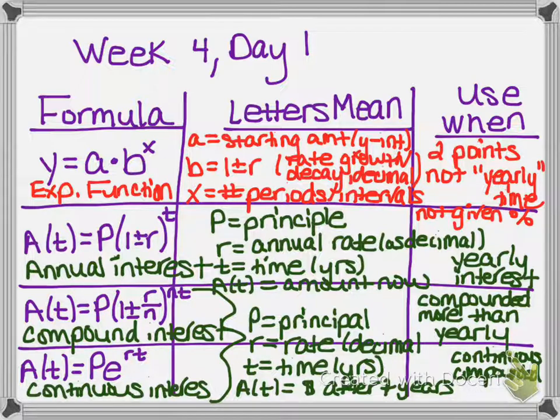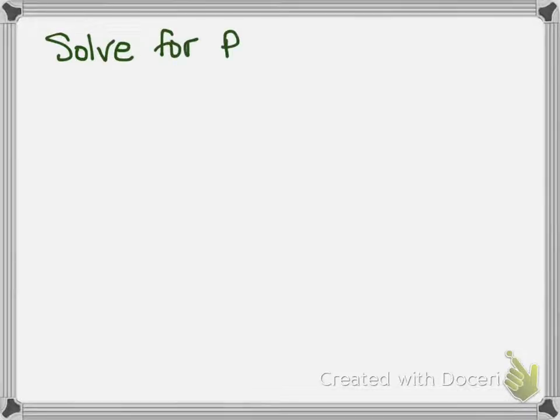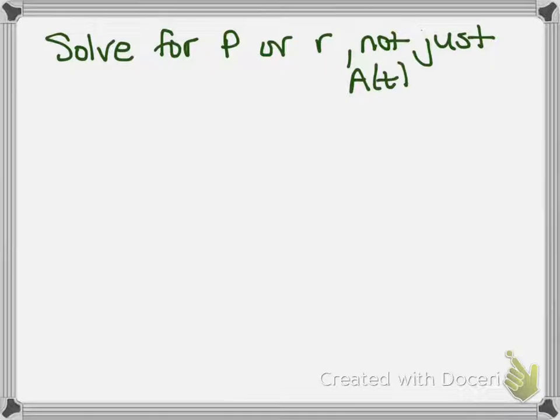So those are the four formulas we wanted you to review and fill in your table. You had used these a little bit to solve for time, because we taught you how to use logs to solve exponentials. But what we're going to be wrapping up this unit with is reviewing and solving all different kinds of equations. There are still two things we have not yet practiced solving for. Not everything requires logs — part of solving is figuring out what you're being asked to solve for and what you need to do. So today we are going to be solving for P, our principal amount, or R, our interest rate.